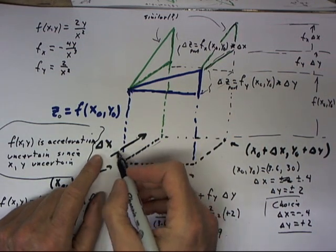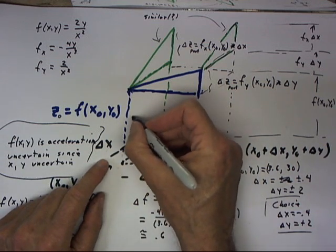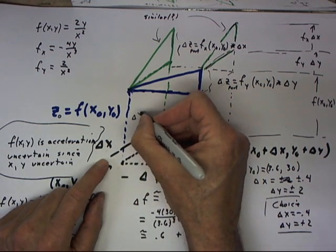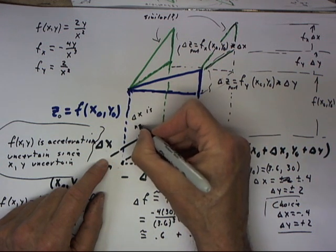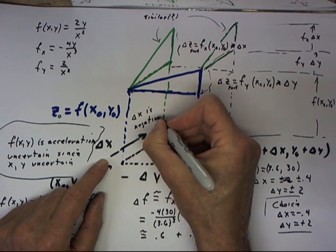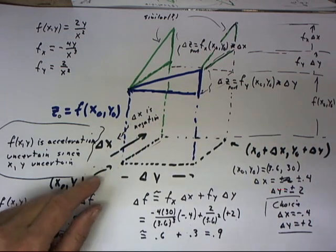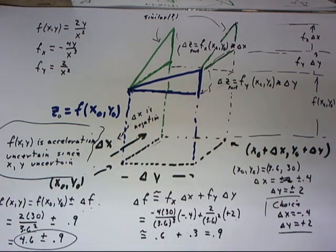Now delta x is in this direction, so we're going to say here, we're just going to write this out, that delta x is negative since it's going in the negative x direction.